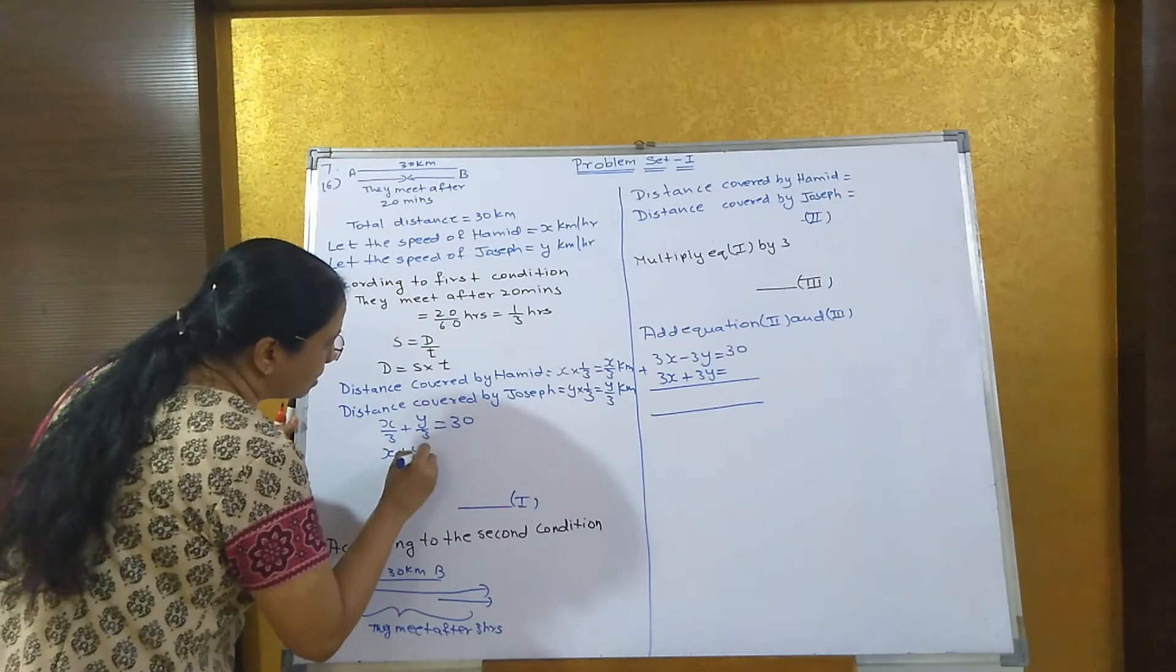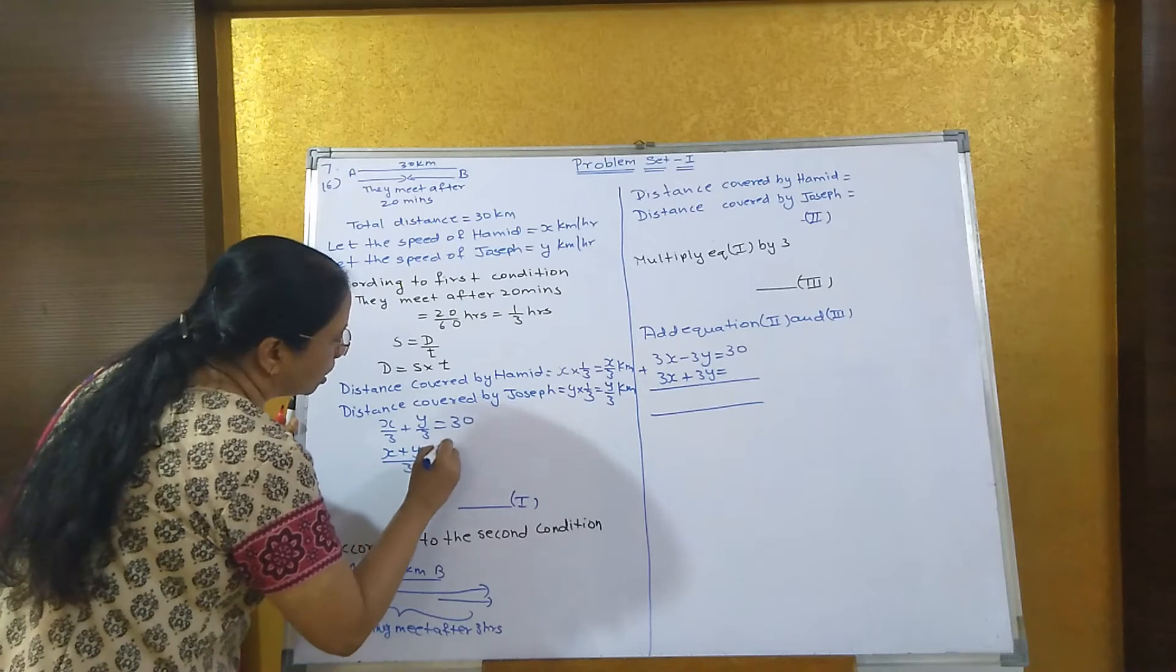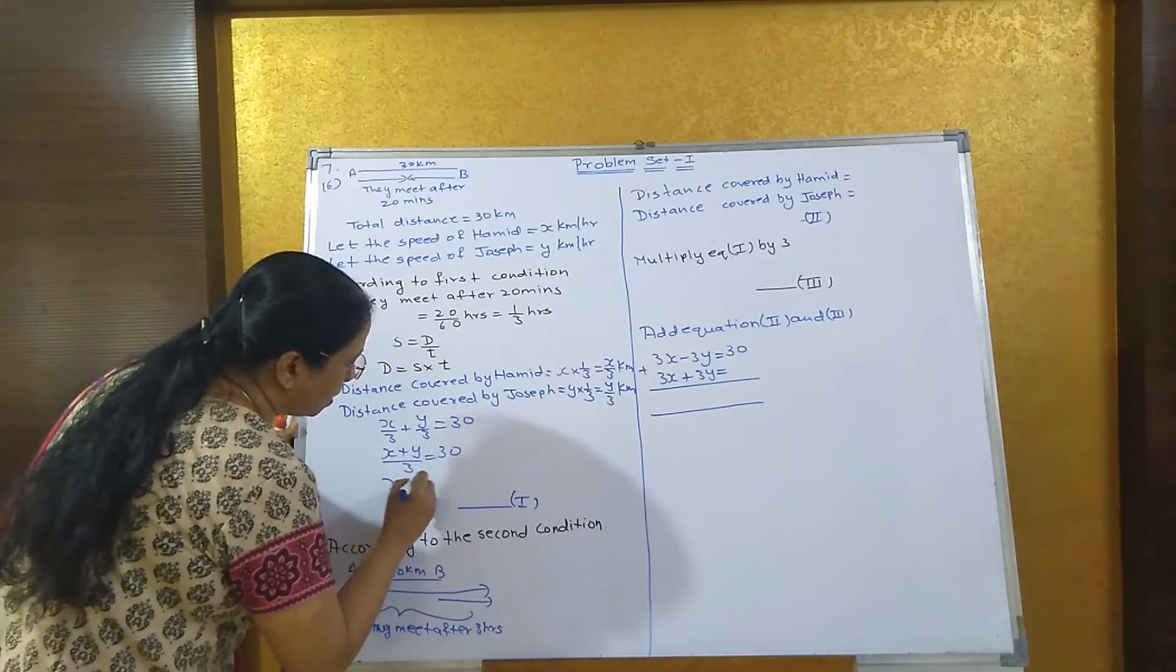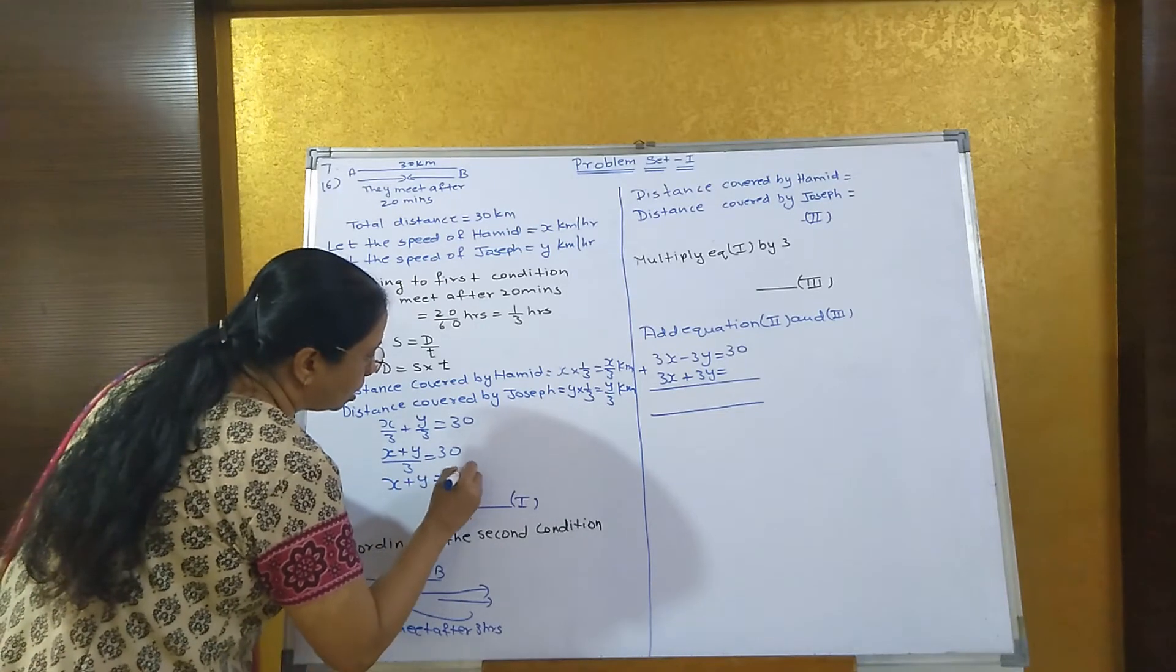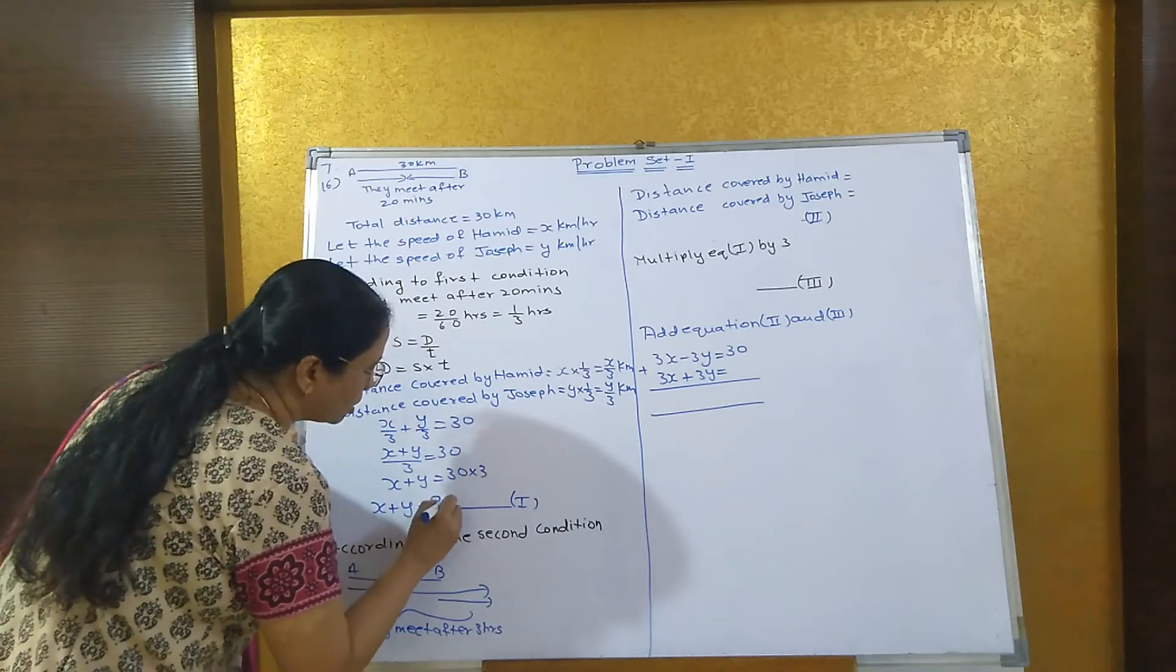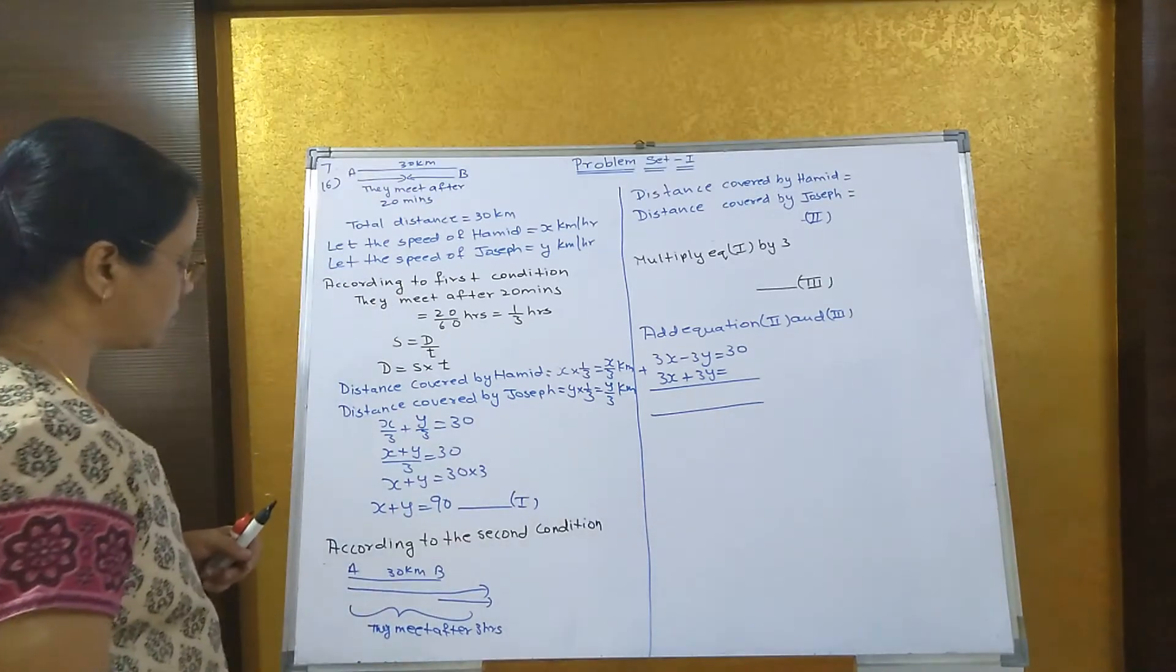That is x plus y since the denominator is the same. Take 3 common. Take the 3 on the other side. You get x plus y equals 30 into 3. So x plus y equals 90. That is your first equation.